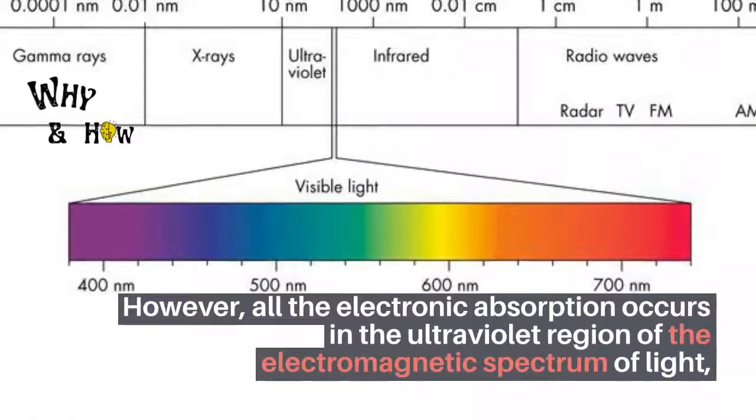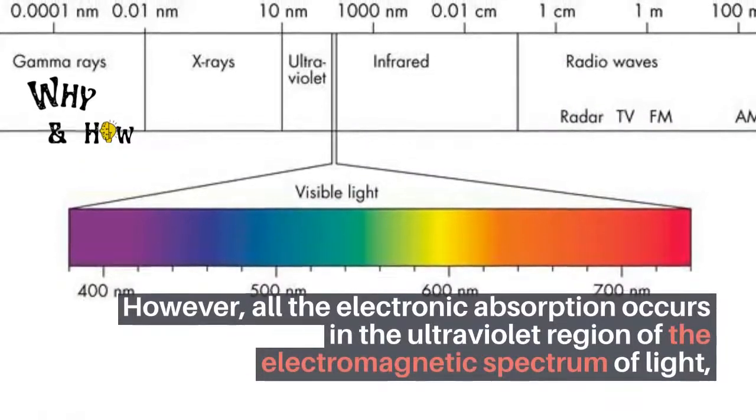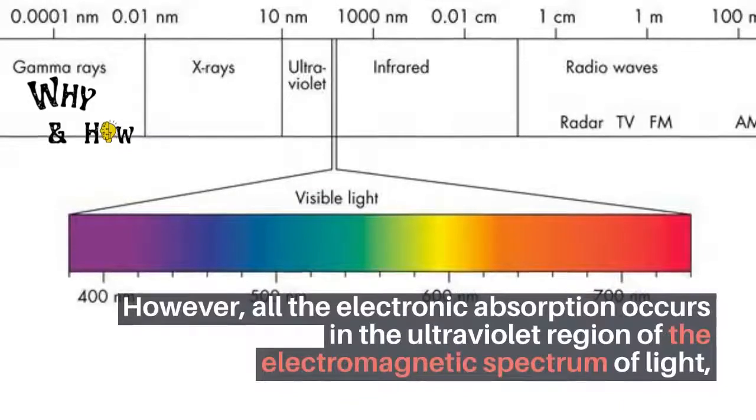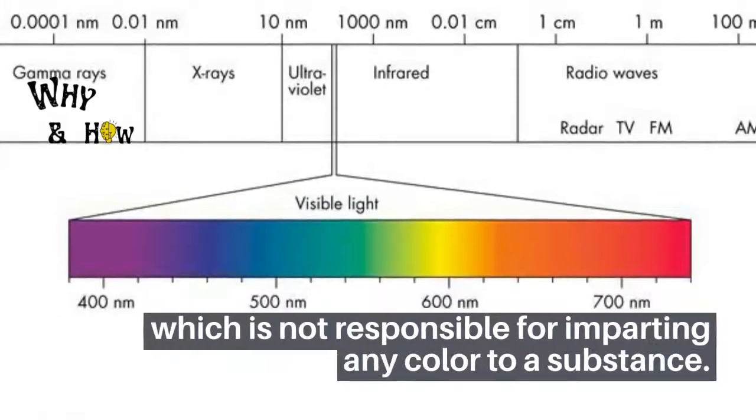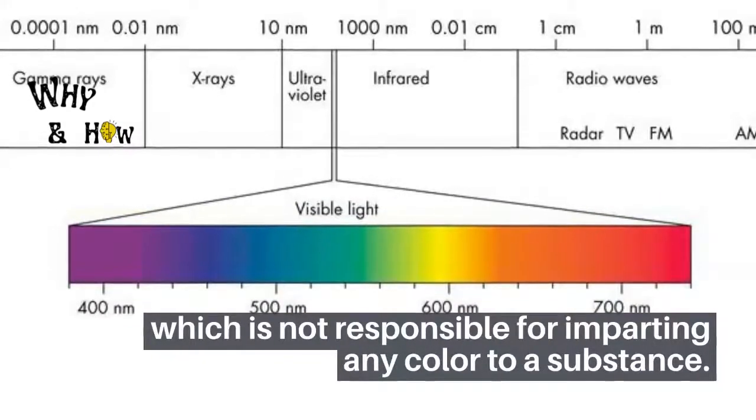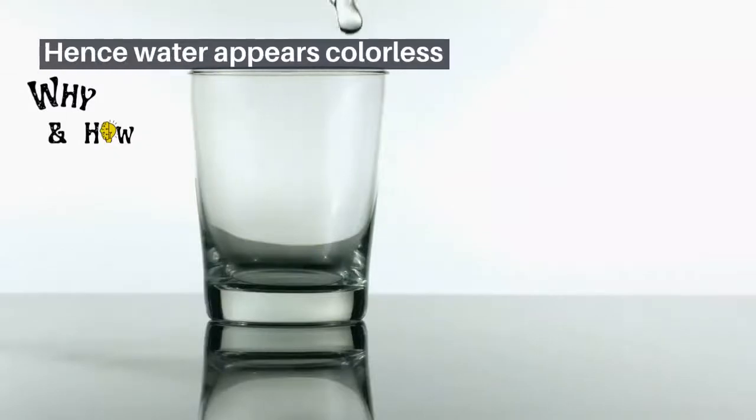However, all the electronic absorption occurs in the ultraviolet region of the electromagnetic spectrum of light, which is not responsible for imparting any color to a substance. Hence water appears colorless.